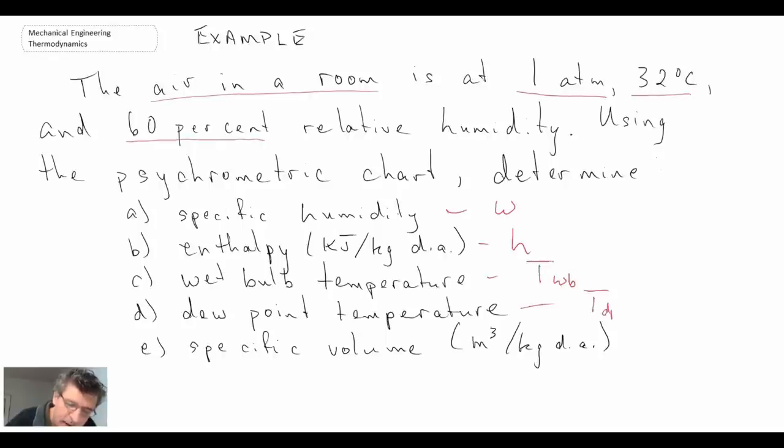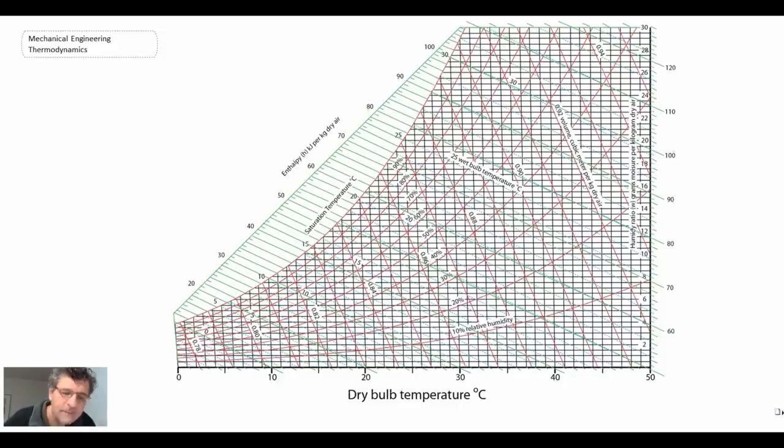So what we're going to do is go and read the values off of the psychrometric chart in order to obtain these values. And what you'll see is that it's quite a bit more efficient than using the equations that we saw, although the equations will apply for whatever atmospheric pressure you might be dealing with, whereas a psychrometric chart only works for whatever particular pressure, and the one that we're looking at here is for one atmosphere.